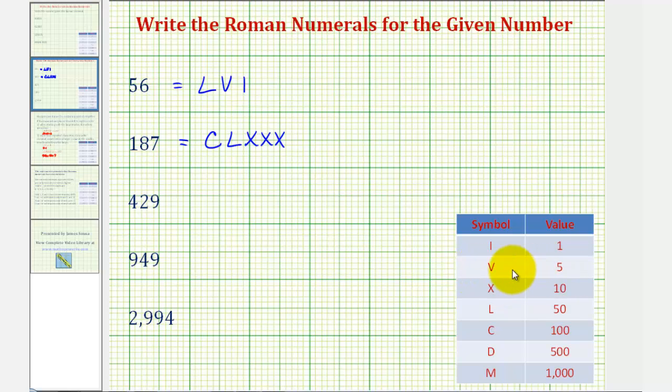And then for seven, we can use a v and two i's. Because we have the largest values first, followed by the smaller values, we add all the values, giving us 187.